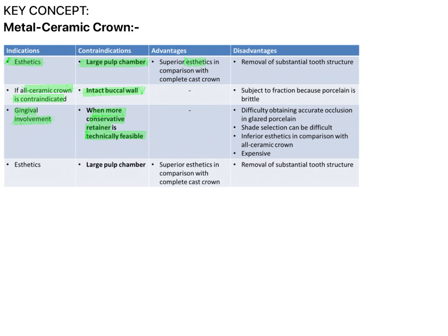The advantage of metal ceramic crown is of course aesthetics. The disadvantage is the amount of tooth structure that is removed, and the disadvantage of porcelain is that it is very brittle. To get a proper shade is difficult because the underlying metal shows through — the translucency of the material is not as excellent as compared to all-ceramic restorations. These are a few contraindications and disadvantages of metal ceramic crown.